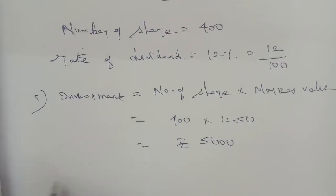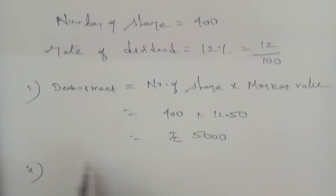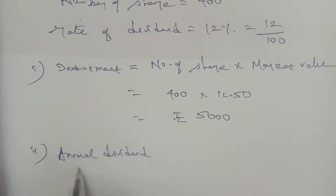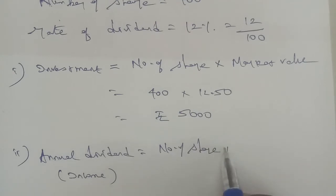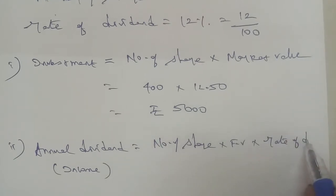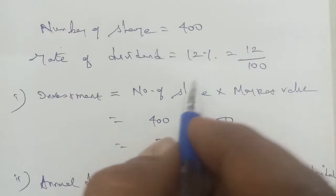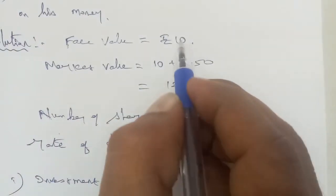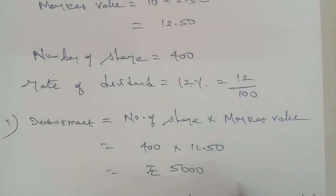This is subdivision 2, which is annual dividend. The annual dividend income formula is: number of shares into face value into rate of dividend. So we apply: number of shares is 400, into face value which is 10, into rate of dividend which is 12 percentage, that's 12 by 100.